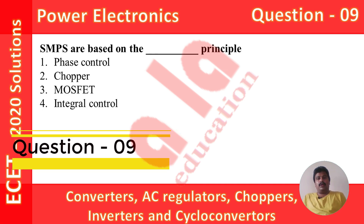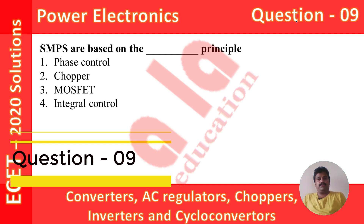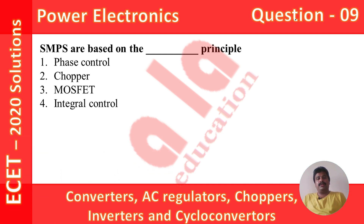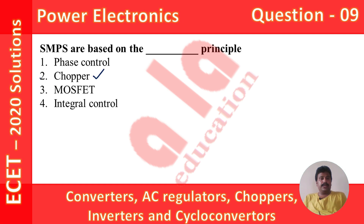Now coming to question number 9. SMPS are based on which principle? SMPS means switching mode power supply. These switched mode power supplies convert AC voltage into DC voltage, containing a rectifier circuit and a DC-to-DC converter circuit. SMPS devices are designed based on the principle of a chopper. So the correct answer is chopper, and option 2 is the correct option.